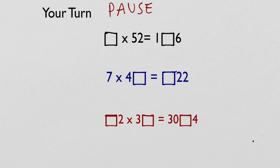First question: something times 52 equals 100-and-something ending in 6. Starting with the units column — what times 2 equals 6? The only option is 3. So 3 goes in the box. Then work out 3 × 52 = 156, so the 5 goes in the answer.